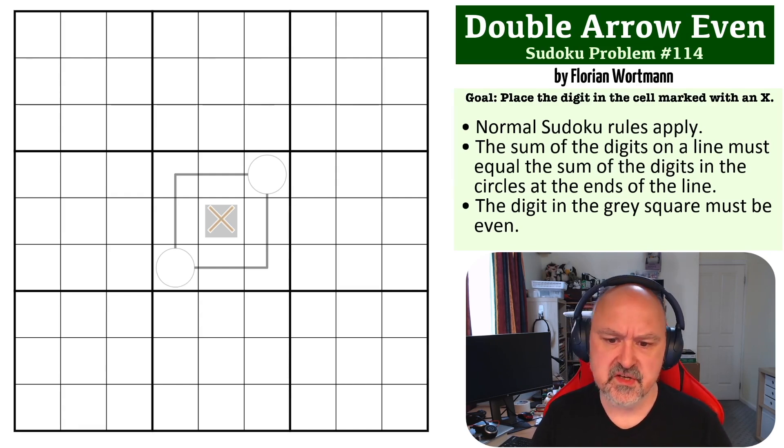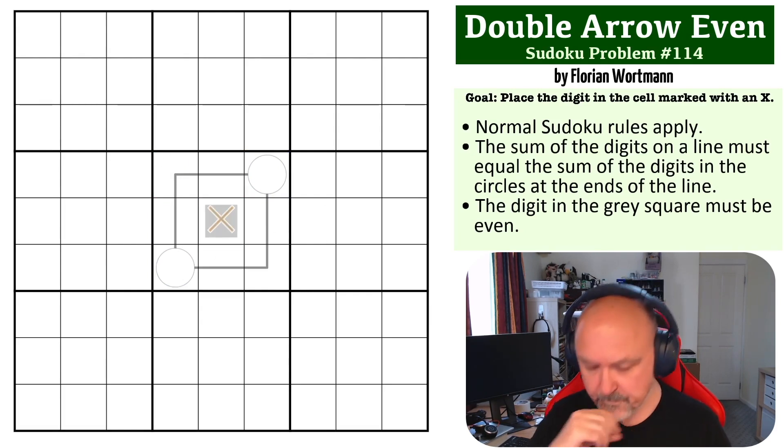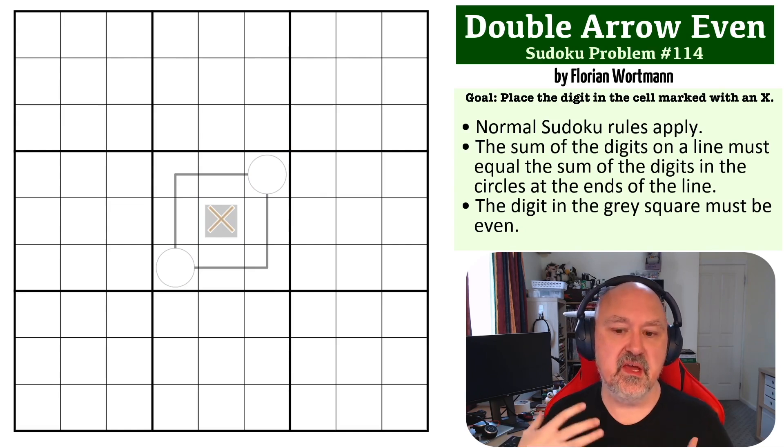The way double arrows work is the digits placed on the line of a double arrow must sum to the same as the circles at the end of that line. And the even constraint, of course, is a gray square must be even. The goal is to place the digit in the cell marked with an X.